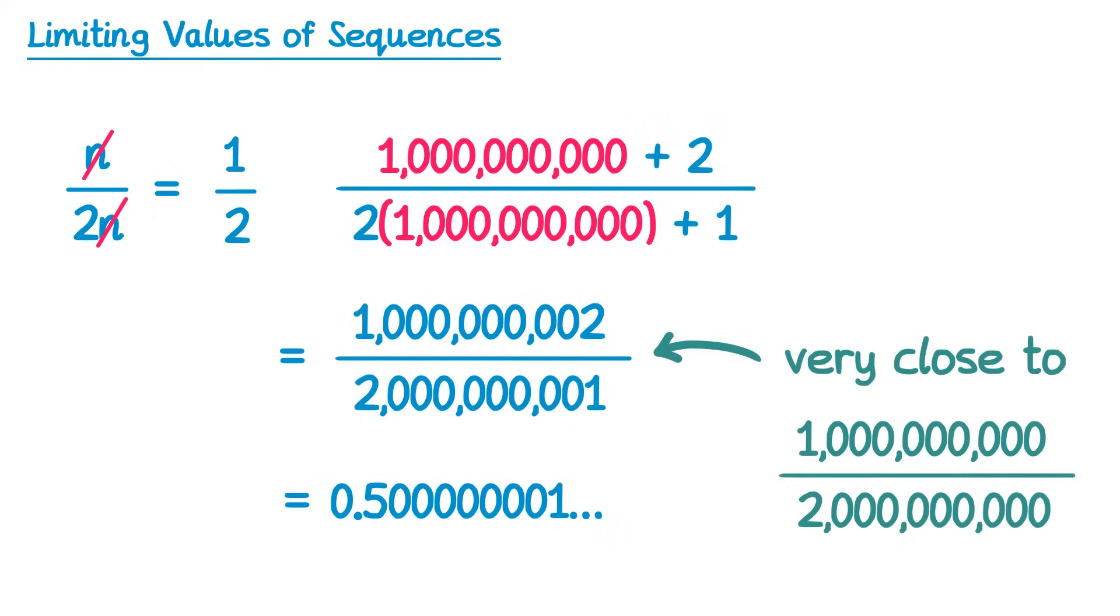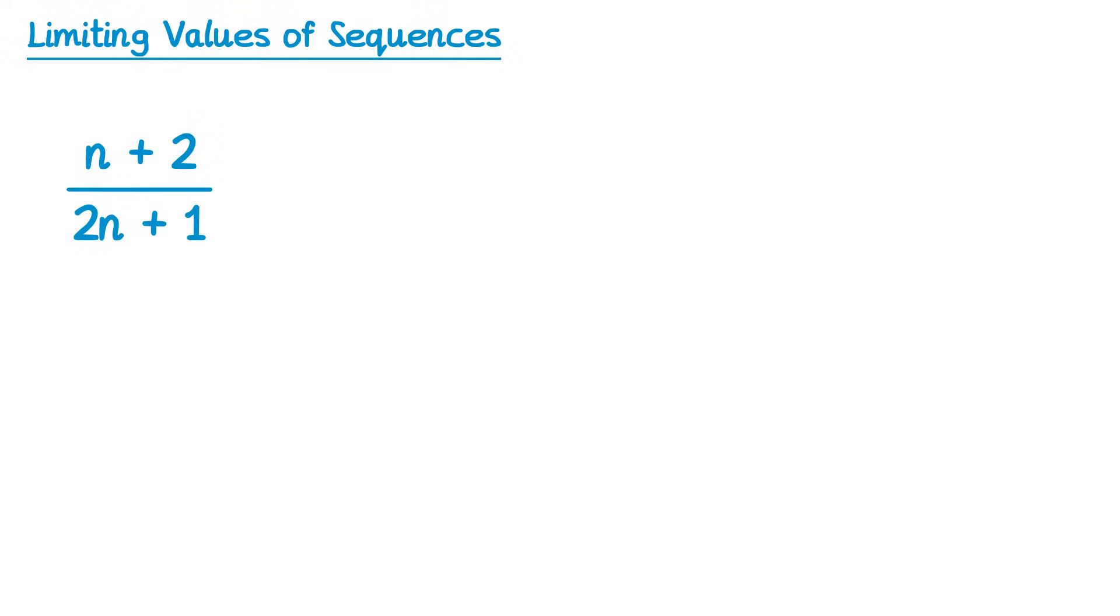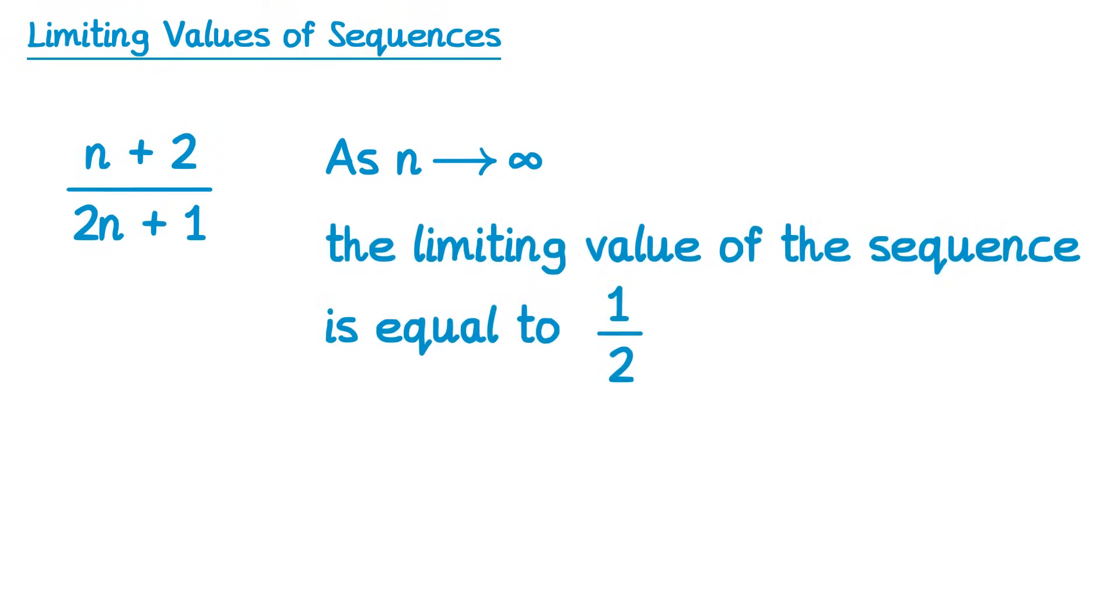We call one half the limiting value of this sequence. We can't actually achieve the value half; it would be the limit of the sequence as n tends towards infinity. So we could write: for this sequence, as n tends towards infinity, the limiting value of the sequence is equal to one half. You could think of it as the number that we get extremely close to for really really big values of n.